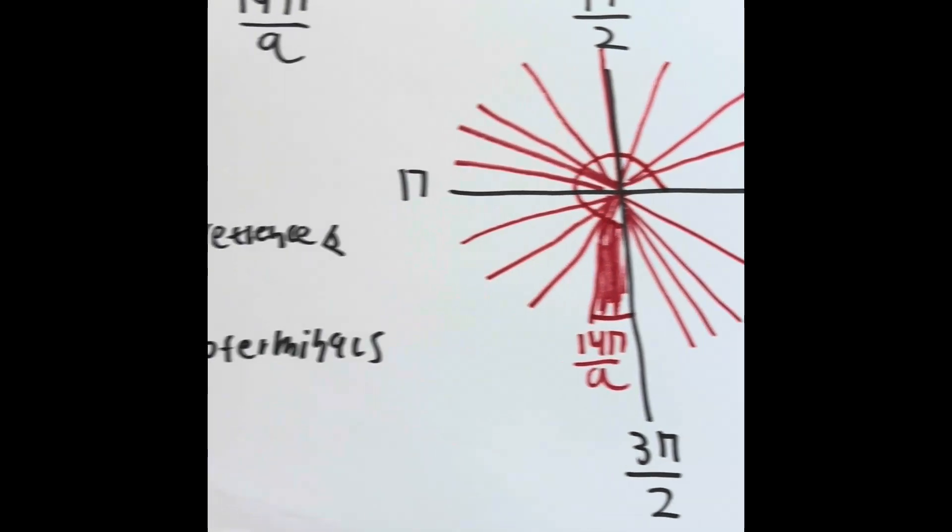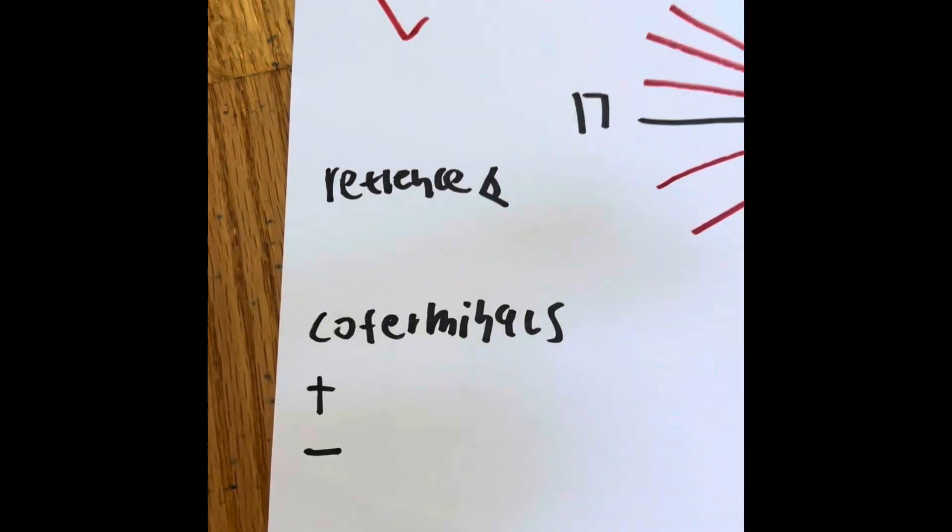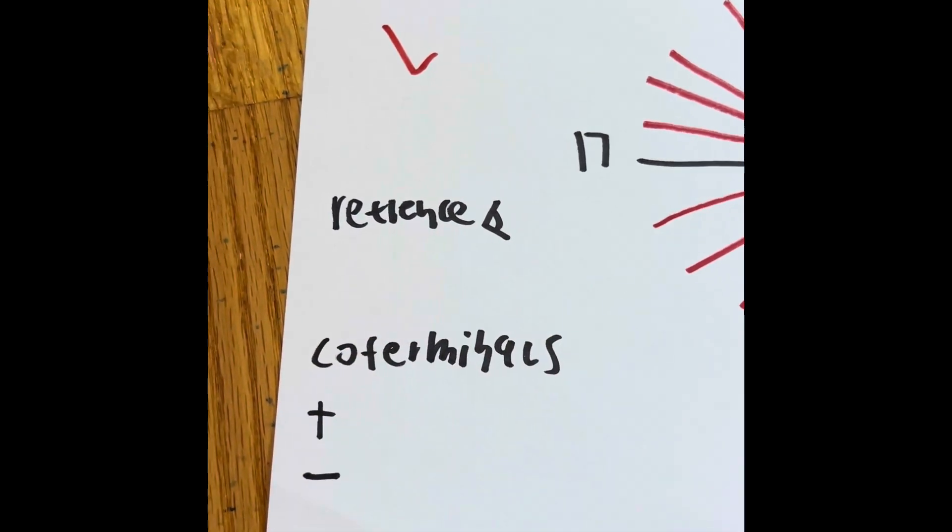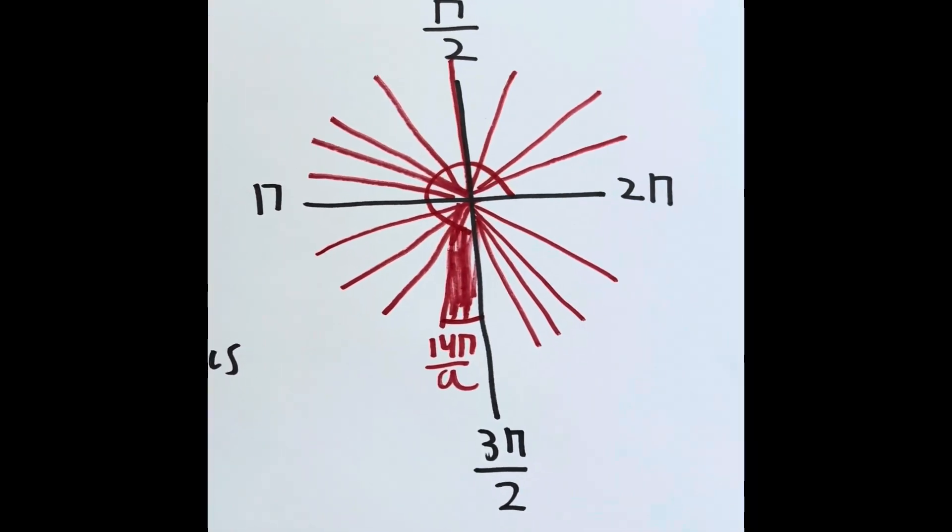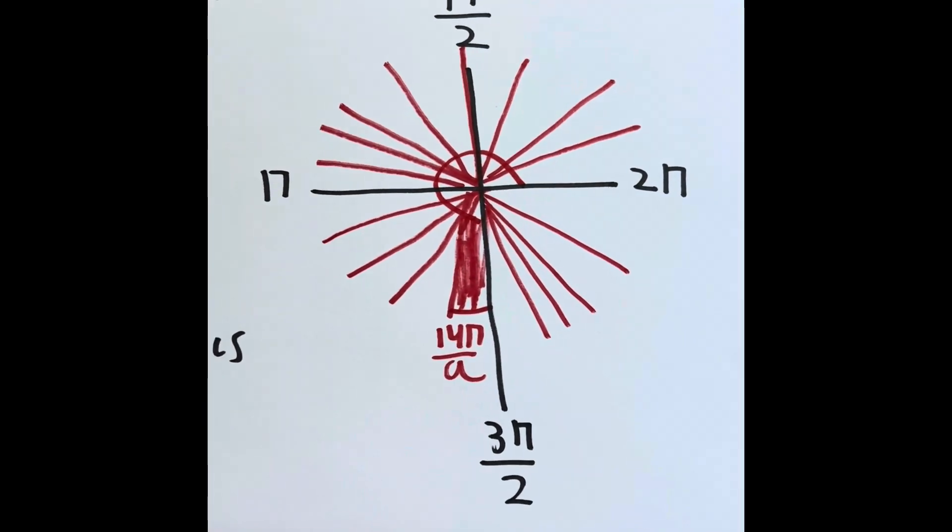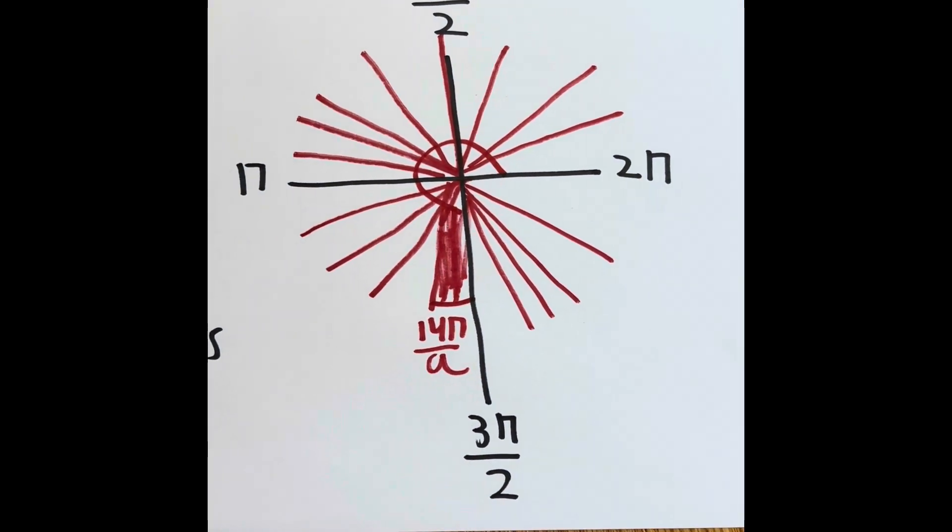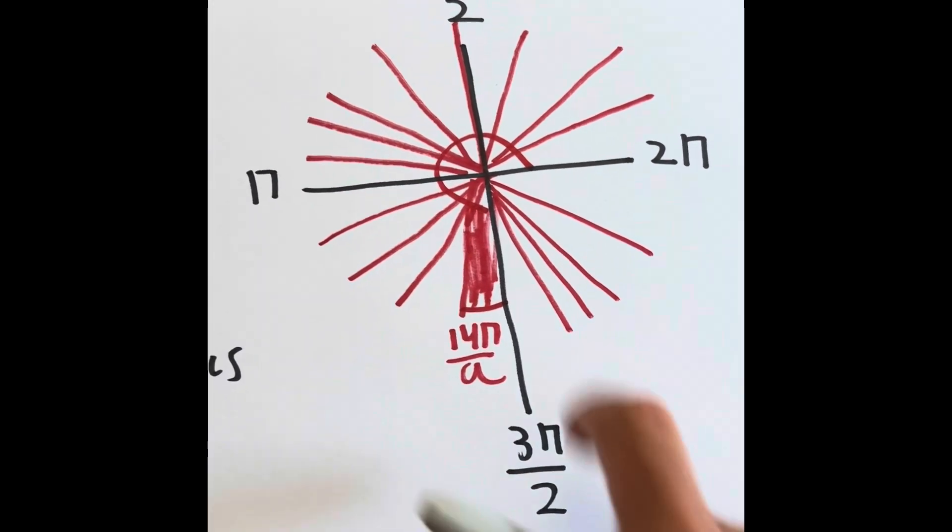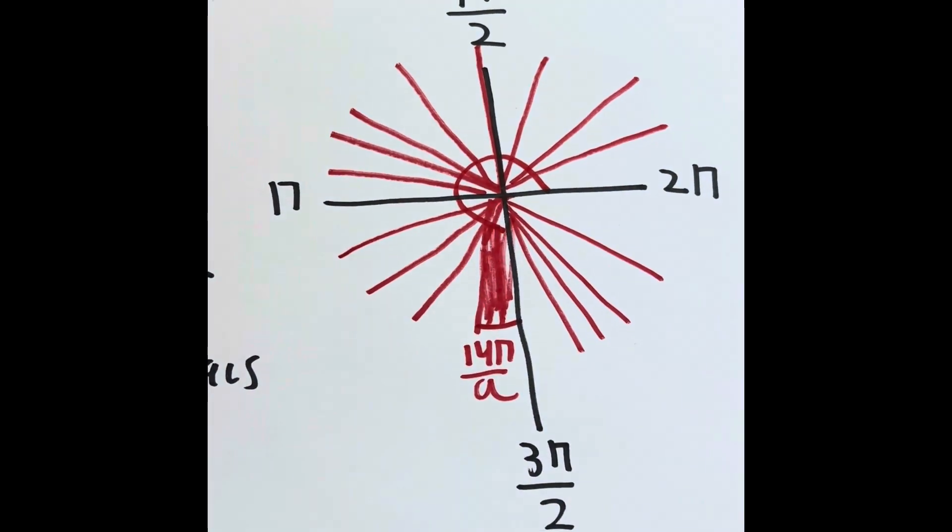So the angle goes all the way around here. Sounds kind of weird. So we know that we have graphed it, so we can check it off. But sometimes your assignment might want you to do the reference angle and the coterminals. Let's try the reference angle first. So going from the previous video, the reference angle is the angle that matches up with the line of the side terminal. So here's the x-axis. Here's the x-axis. π and 2π.